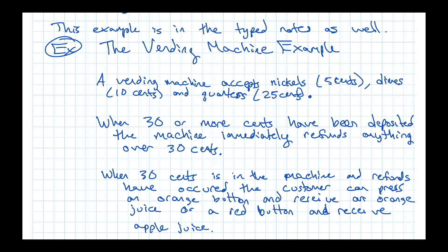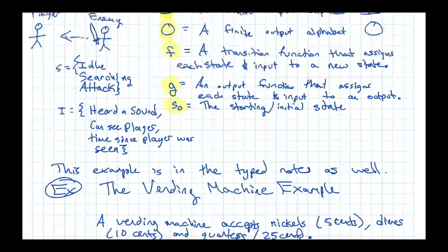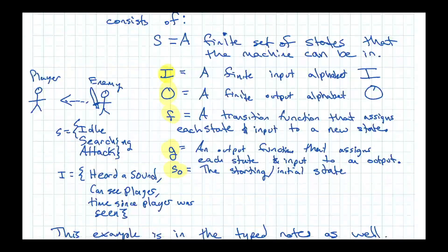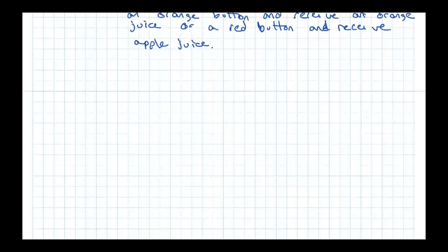This is the description of the problem — not yet in finite state machine format. The way we make this a finite state machine is to write out what S, I, O, f, g, and the initial state should be. Let's go through these one by one.